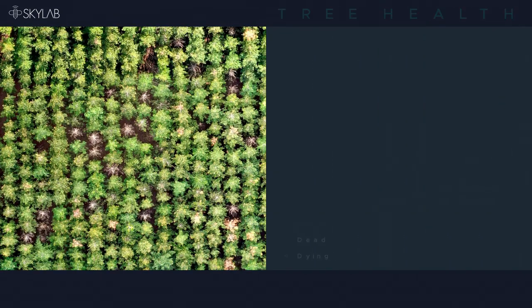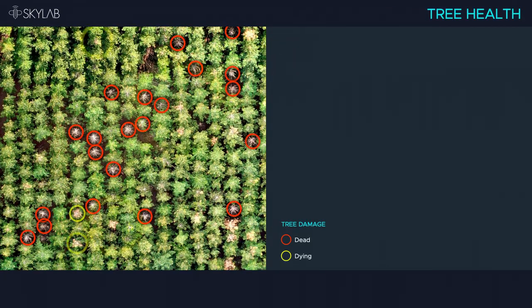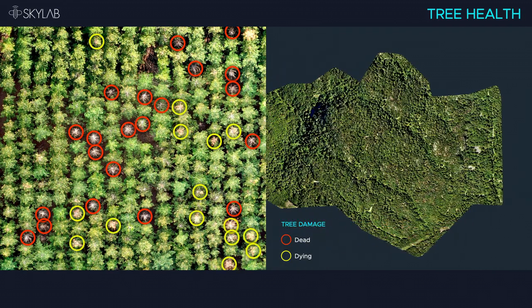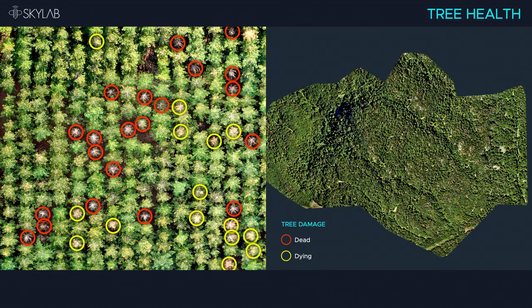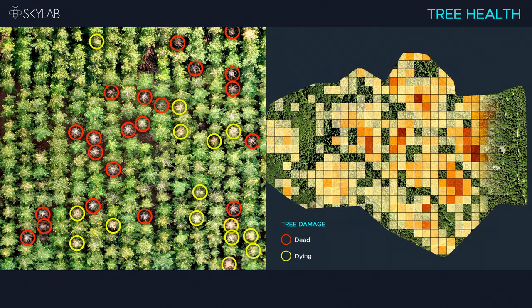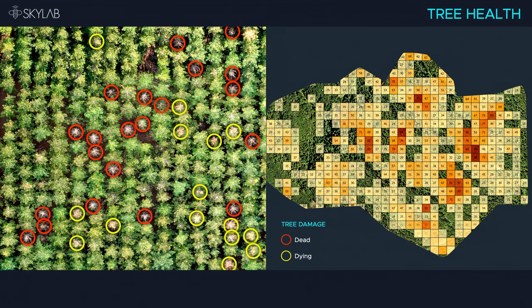We can also detect and locate any dead or dying trees, and the resulting vitality maps allow you to undertake timely action to protect the health of your stand.